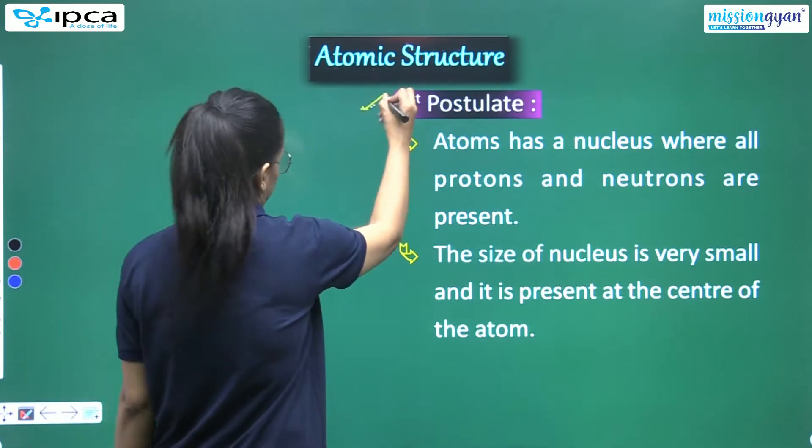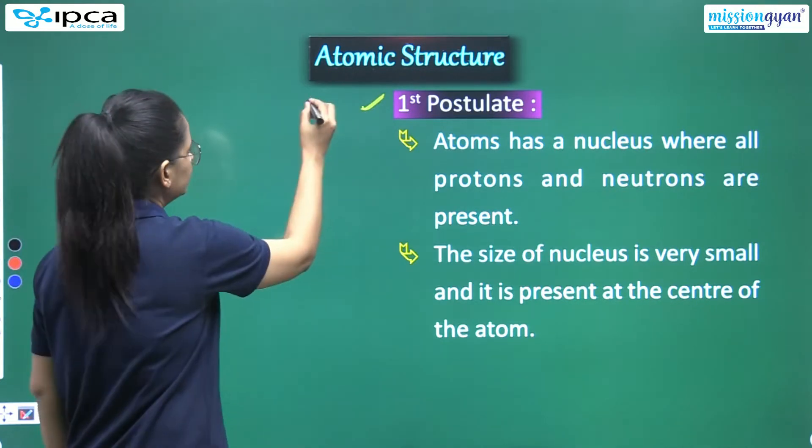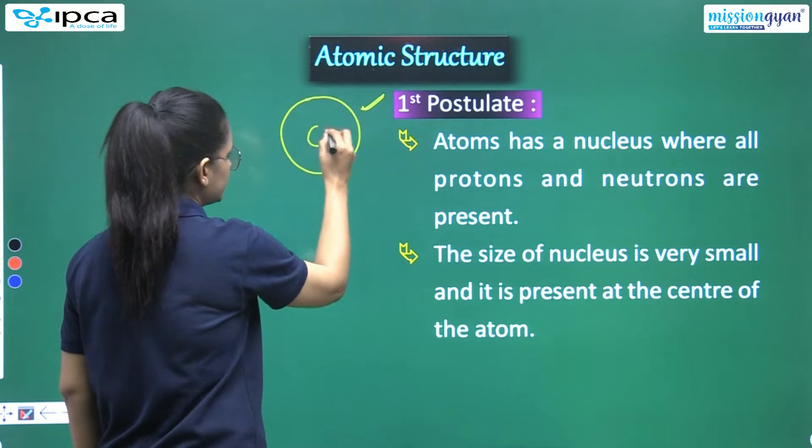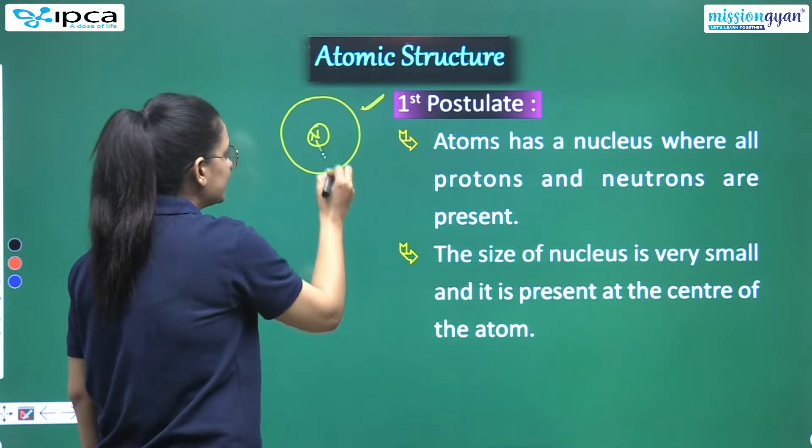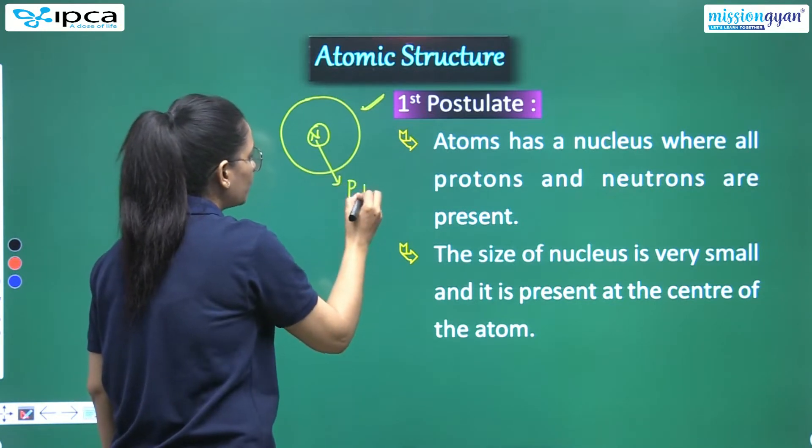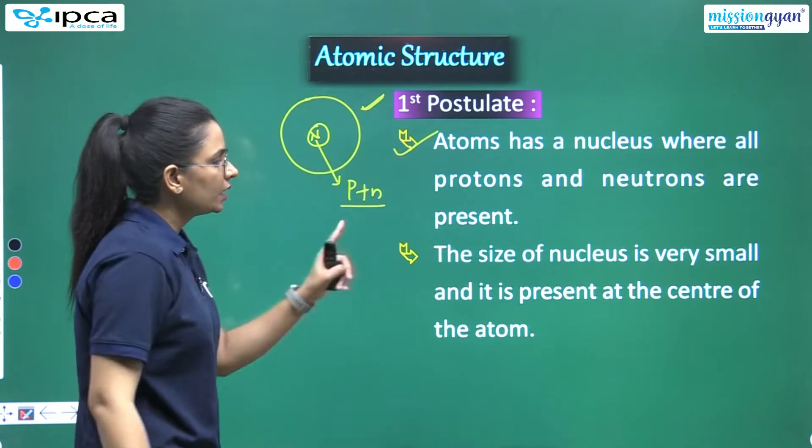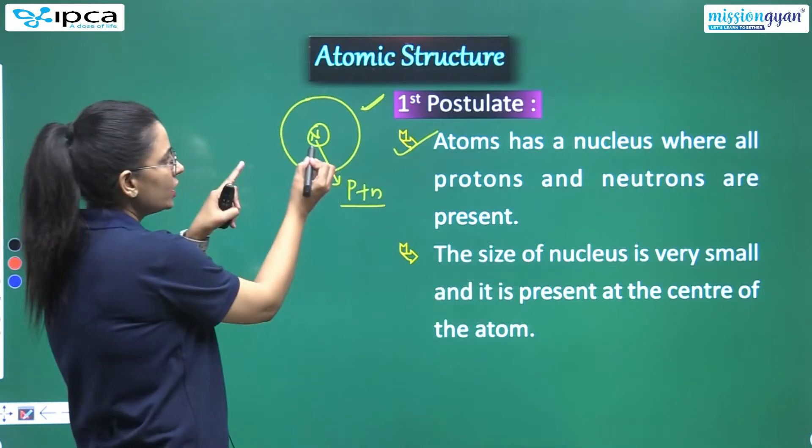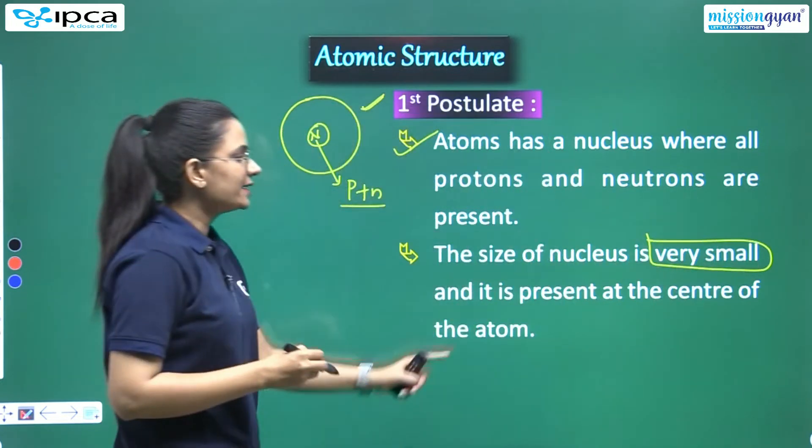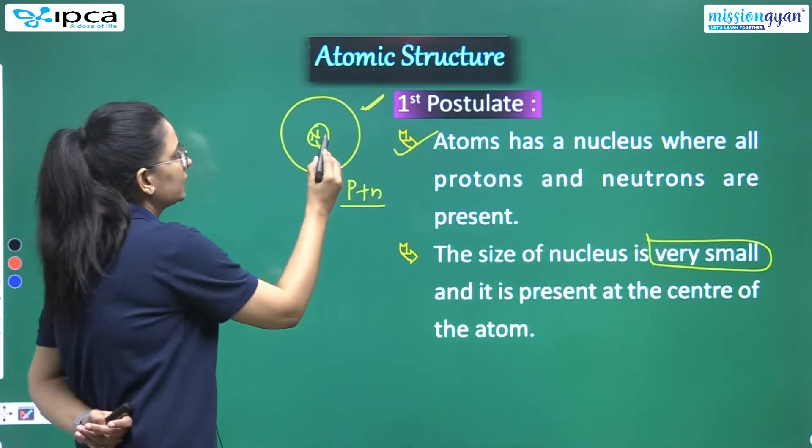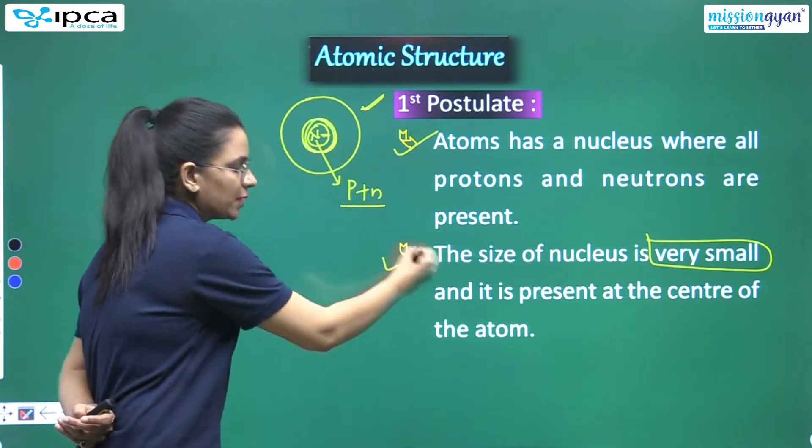Postulate number 1: Atom has a nucleus where all protons and neutrons are present. The size of the nucleus is very small and it is present at the center of the atom. So the second point is also clear.